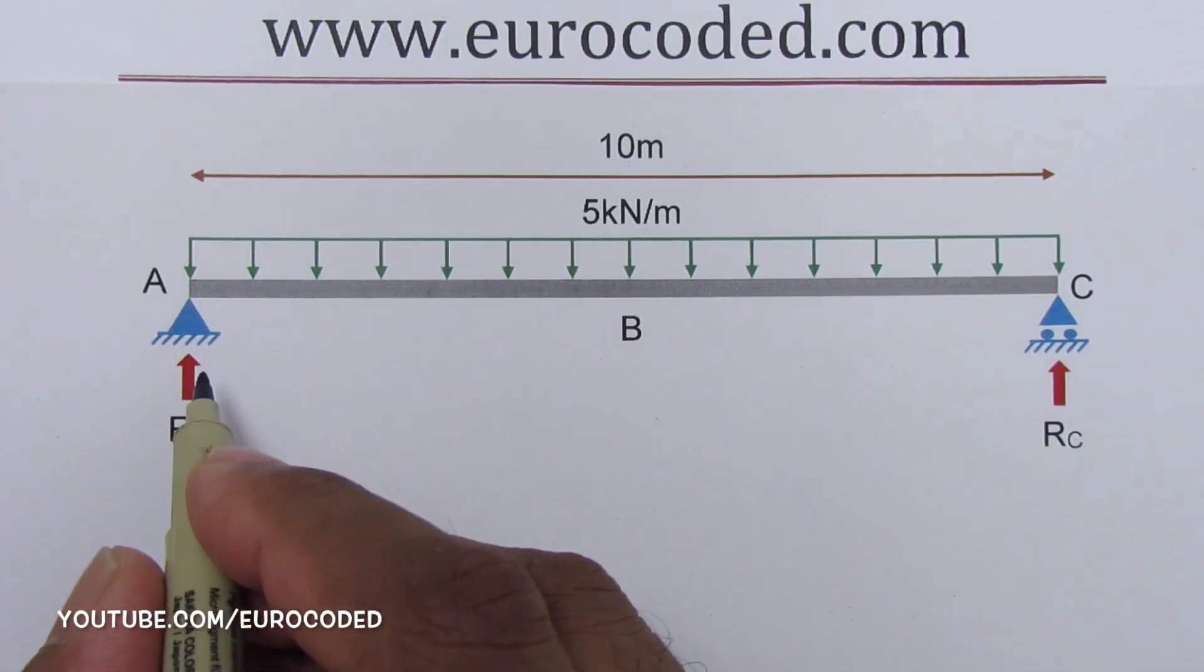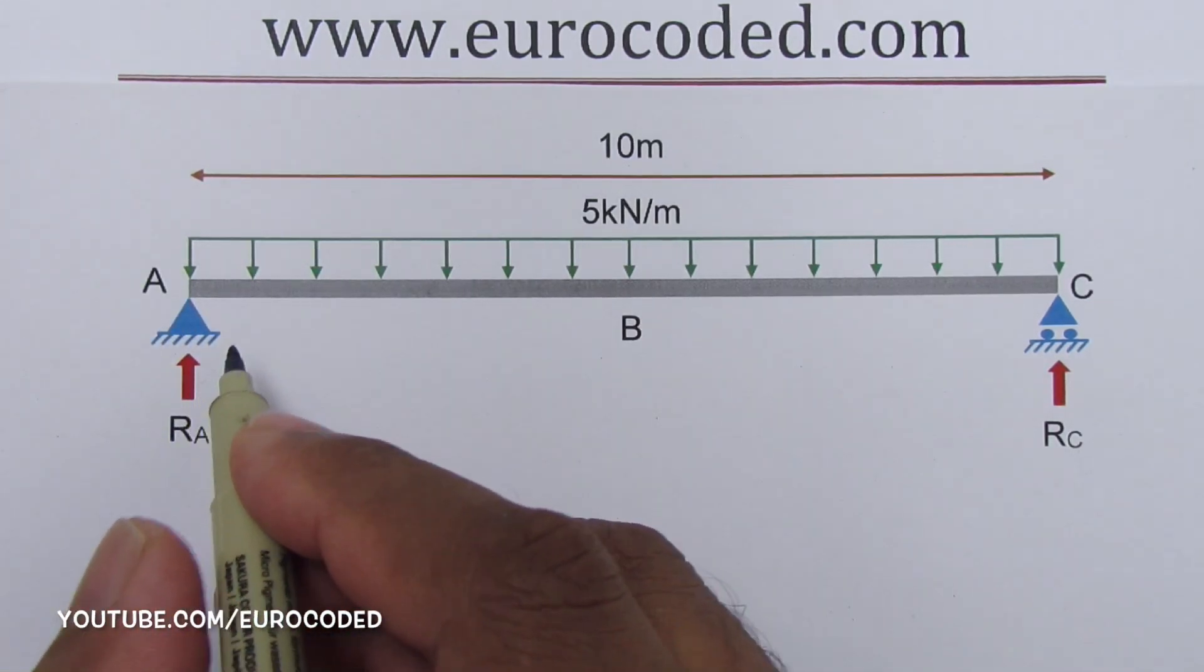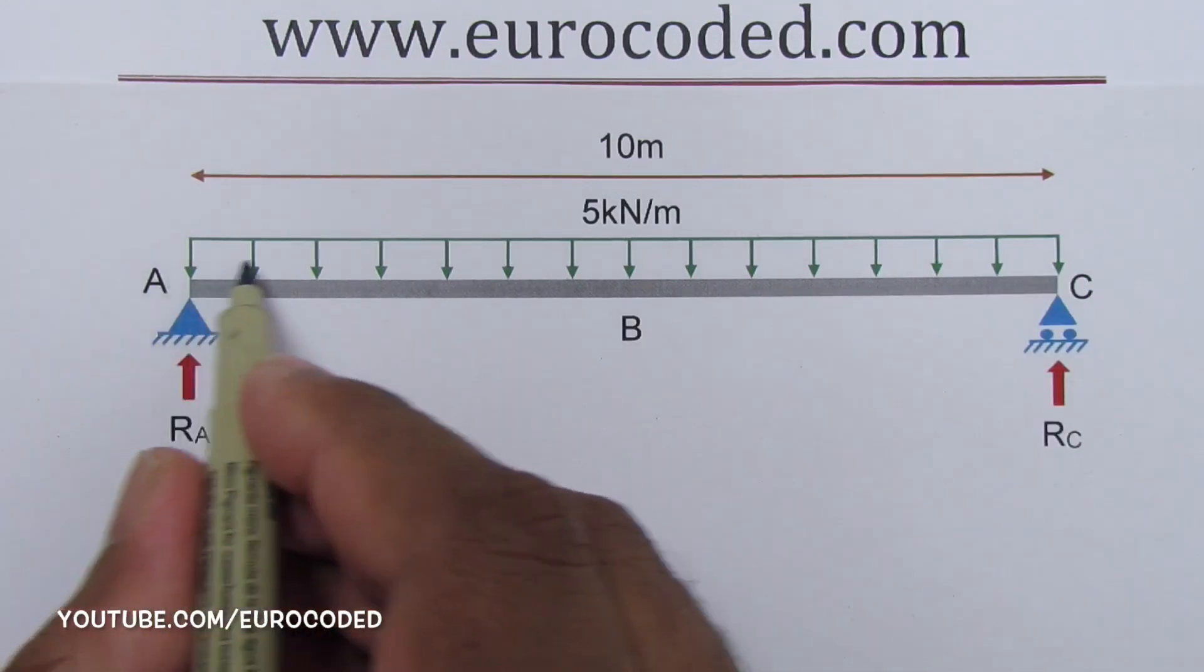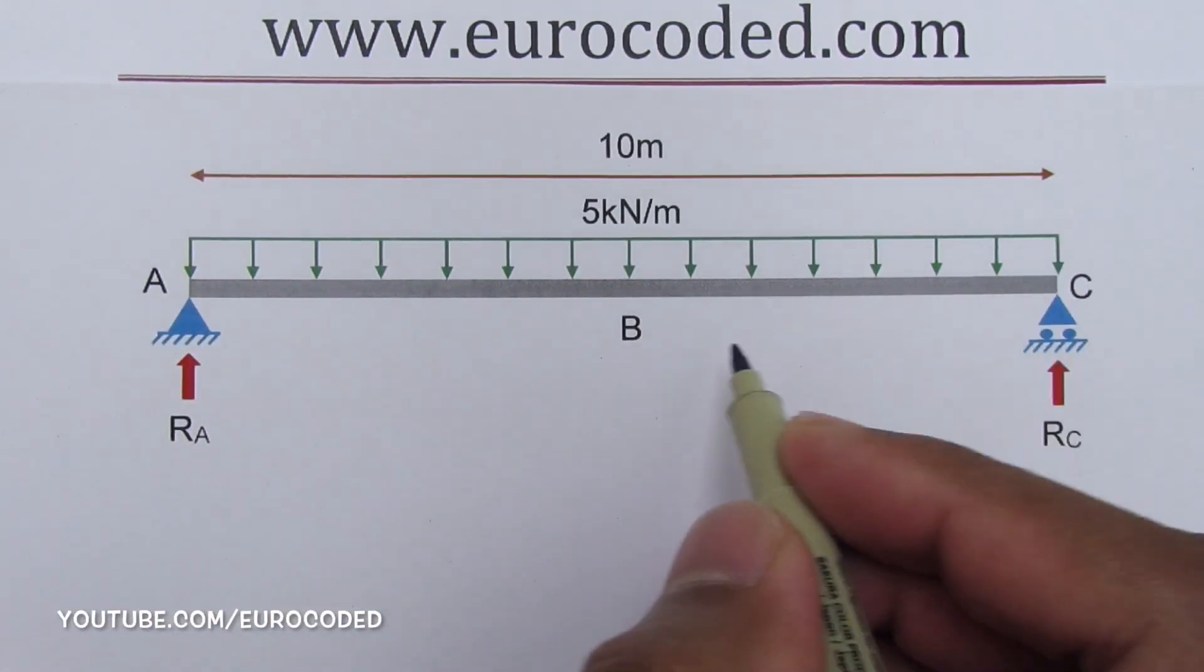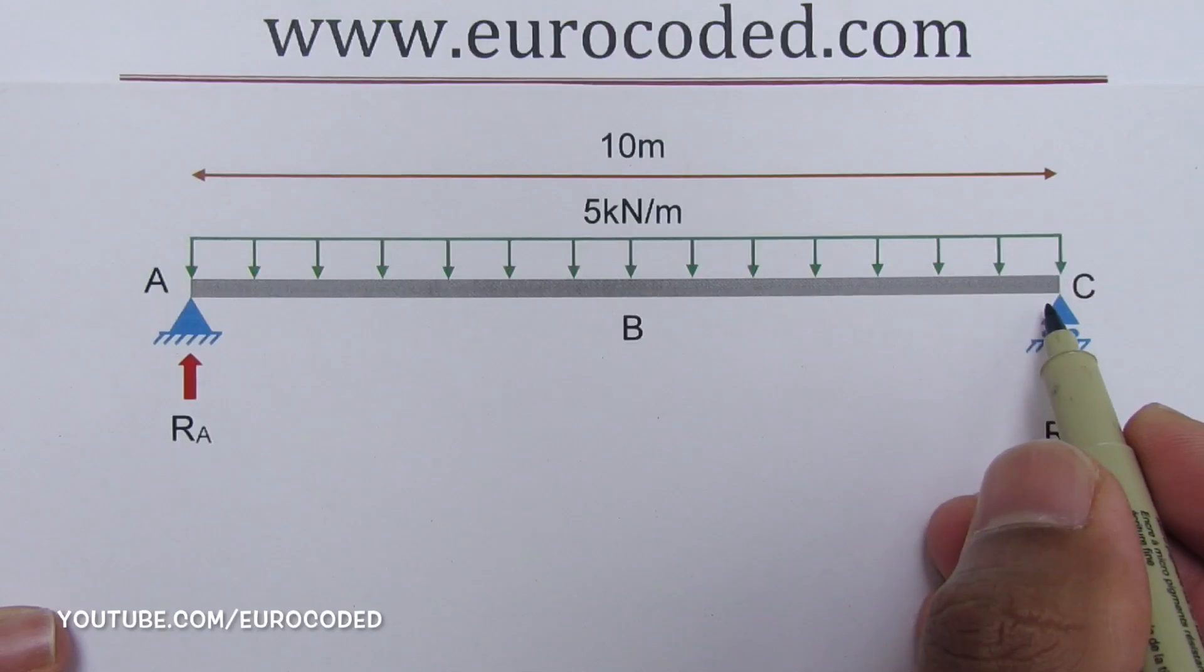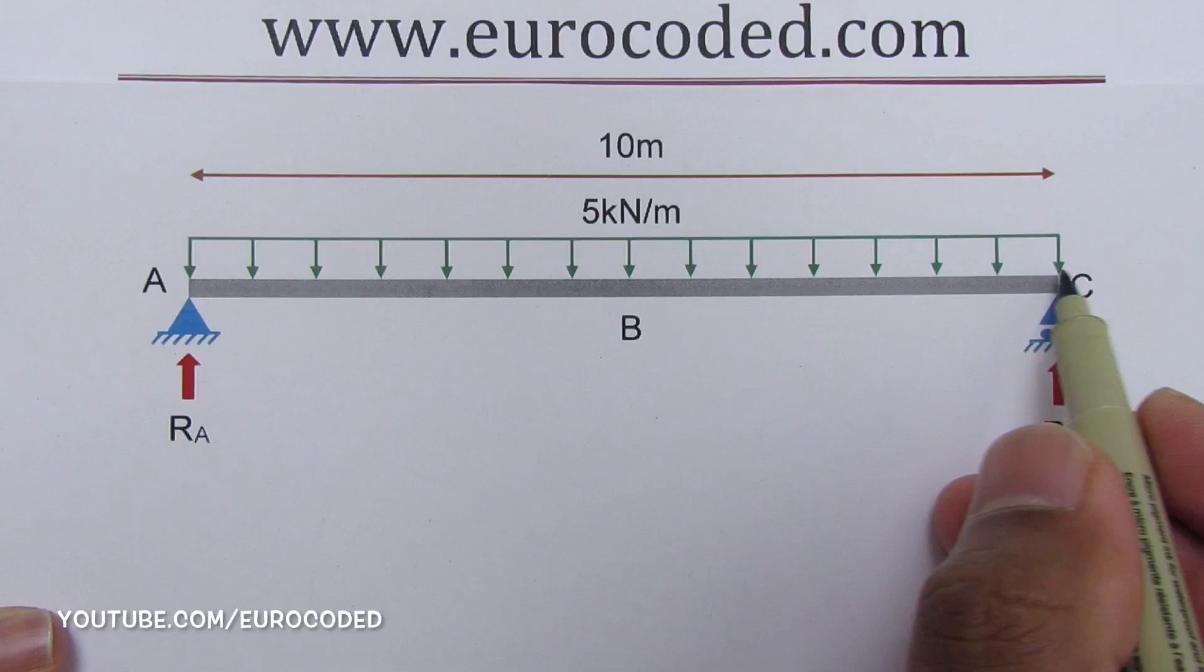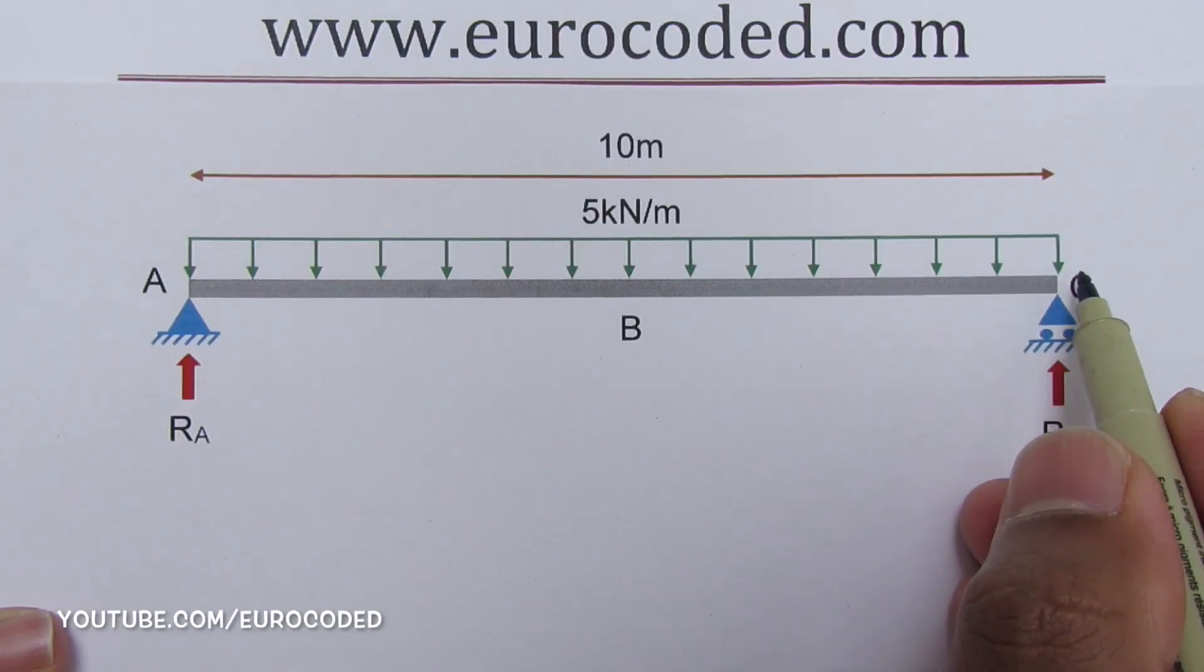To make the calculations relatively simple, first we can replace this UDL or the uniformly distributed load with an equivalent point load. In general, the magnitude of equivalent point load or thrust of a distributed load like this one is equal to the area under the stress distribution and it is located at the center of that distribution.